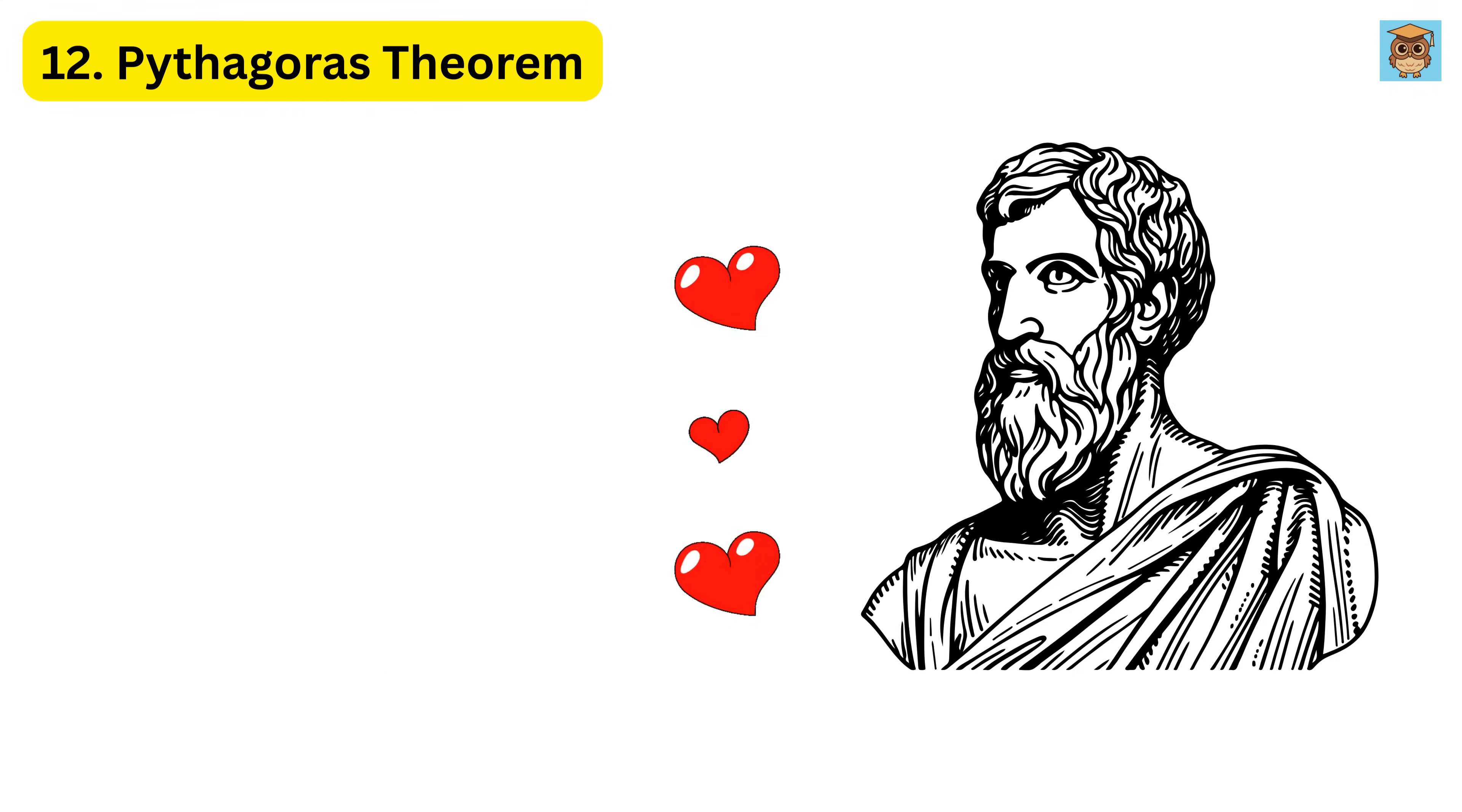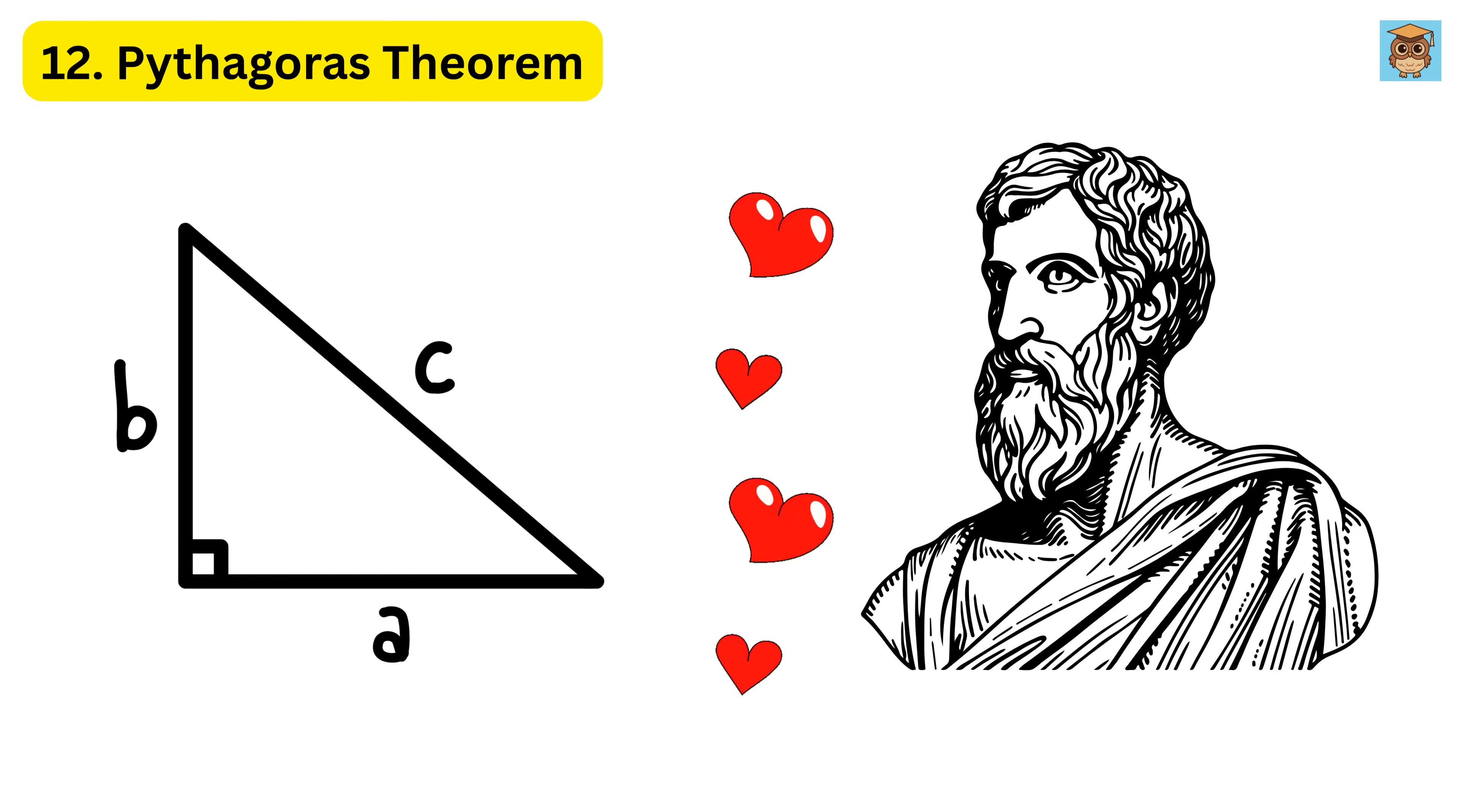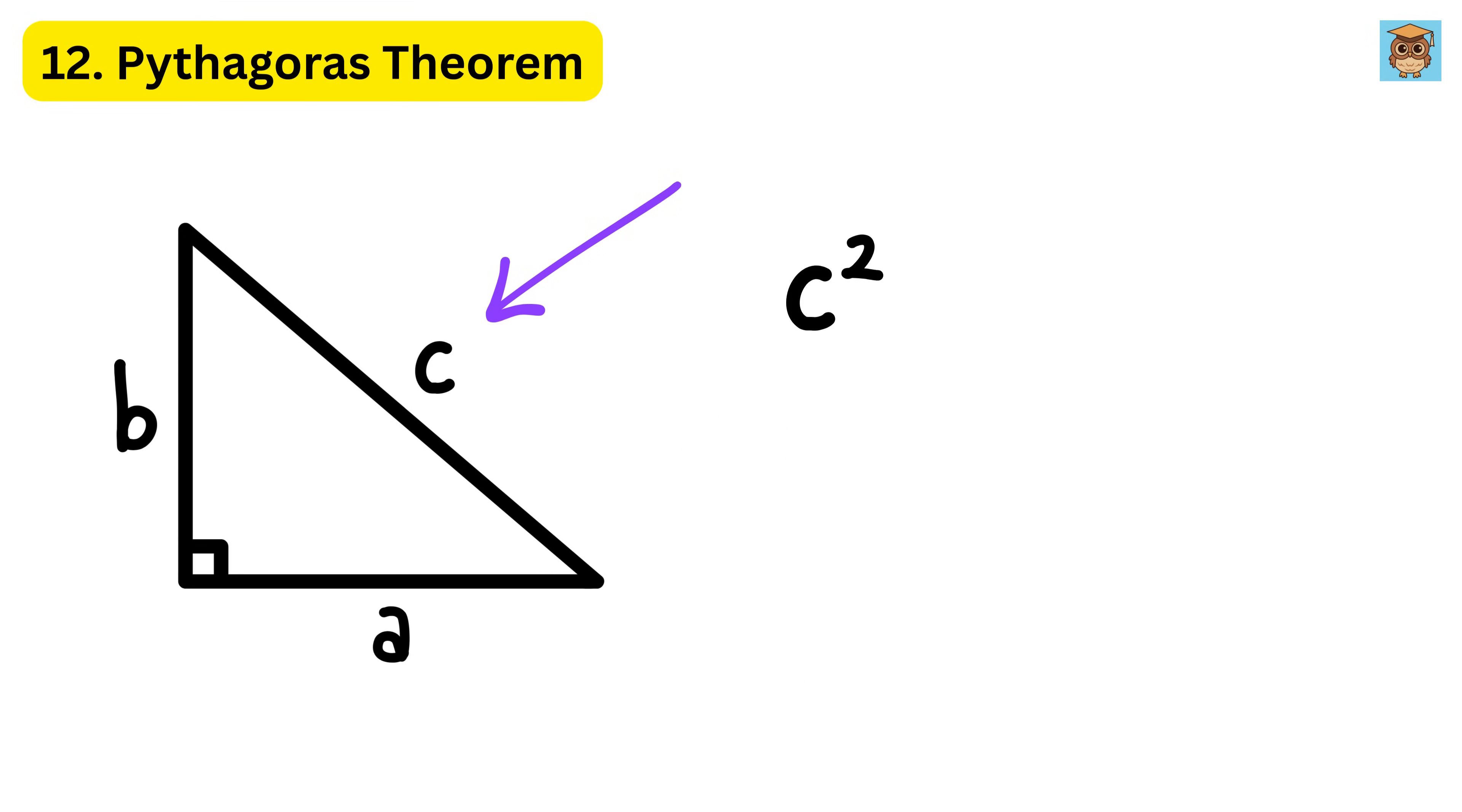12. Pythagorean Theorem. This is the most widely known, most loved, and most useful rule in all of geometry. It applies to right-angled triangles and says that the square of the longest side, the hypotenuse, is equal to the sum of the squares of the other two sides.